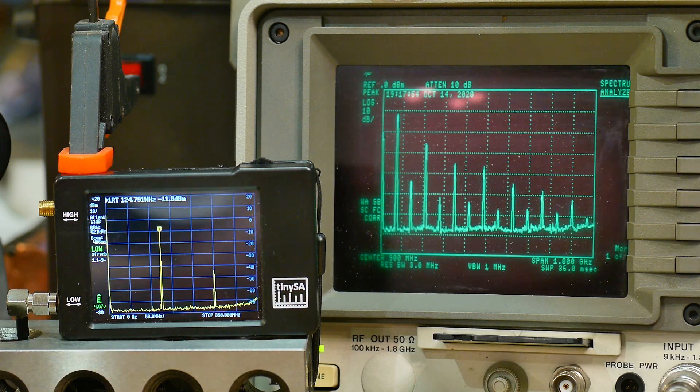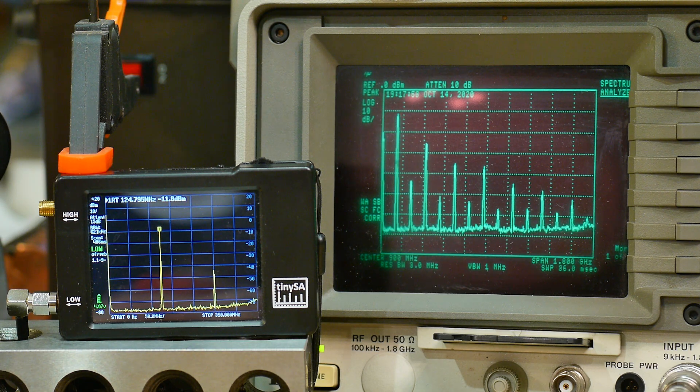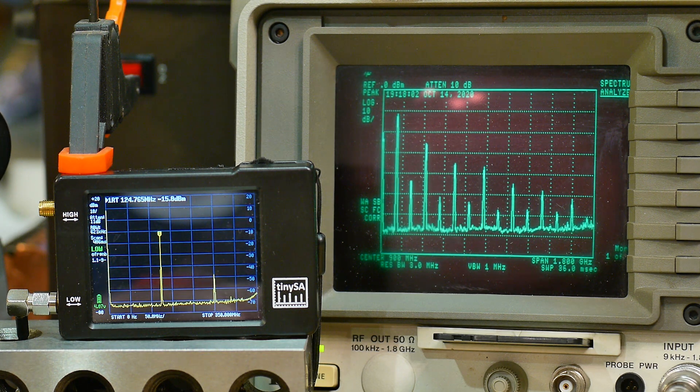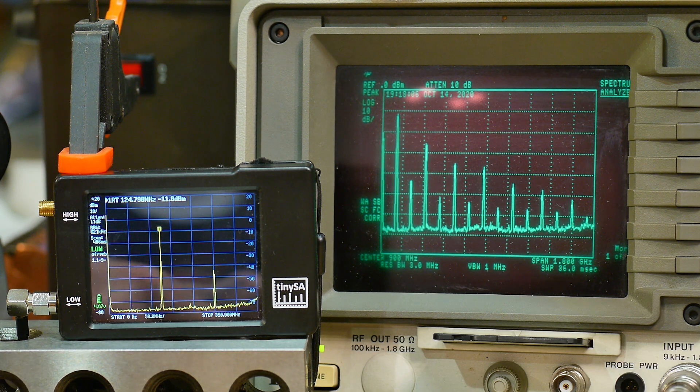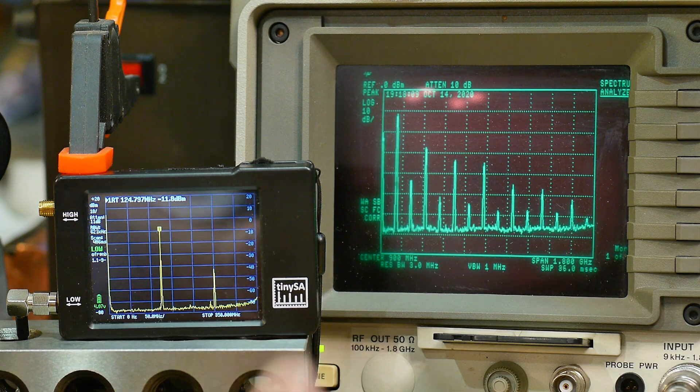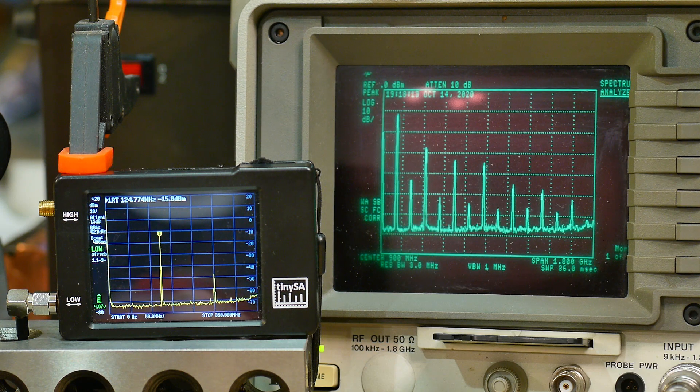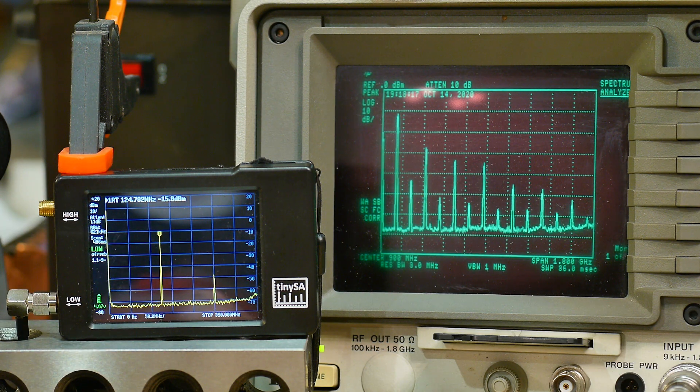Here's one of my major complaints about the TinySA. The attenuation change is jumping. So this is a 125 megahertz crystal oscillator going into a power splitter going to both spectrum analyzers, and you can see that the frequency is jumping here.